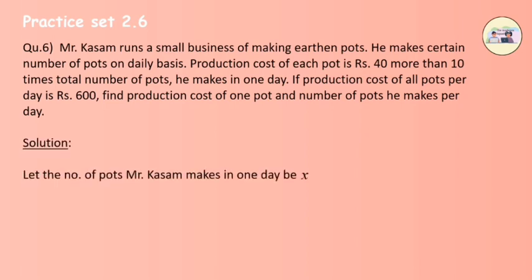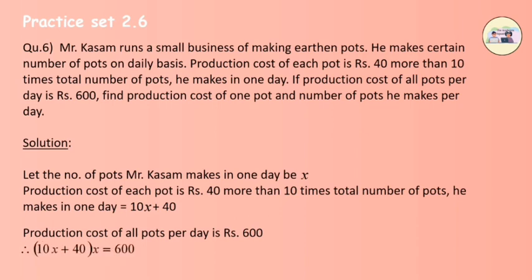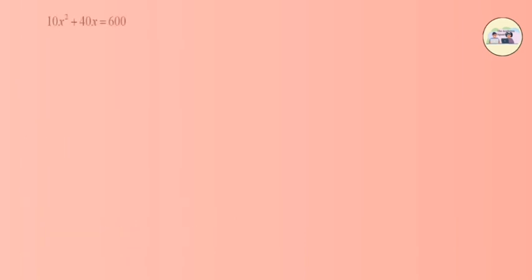Let the number of pots Mr. Kassam makes in one day be x. Production cost of each pot is rupees 40 more than 10 times the total number of pots he makes in one day, that is 10x plus 40. Production cost of all pots per day is rupees 600, so it becomes (10x + 40) × x = 600.